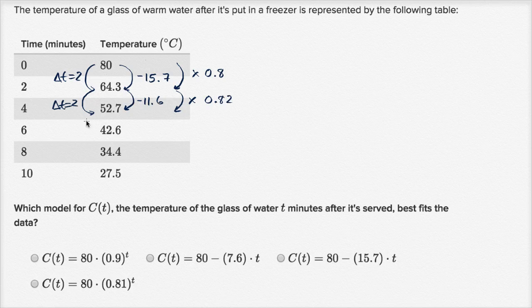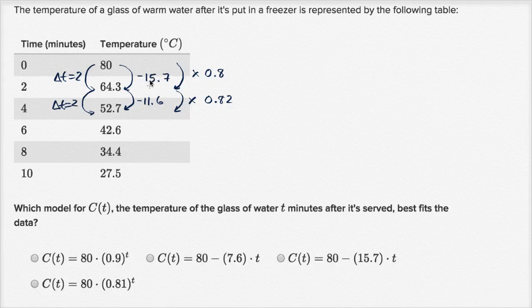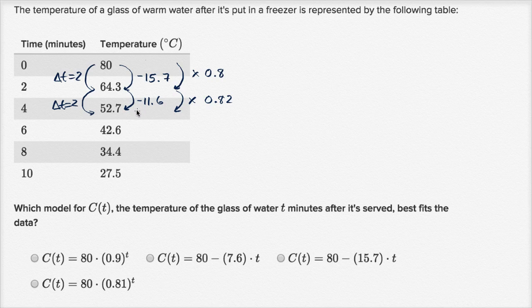So just by looking at this, I could keep going, but it looks like for a given change in time, my absolute change in the number is not even close to being the same. Data that you're collecting in the real world is never going to be perfect. These are models that try to get as close to describing the data. But over here, we keep multiplying by a factor of roughly 0.8.